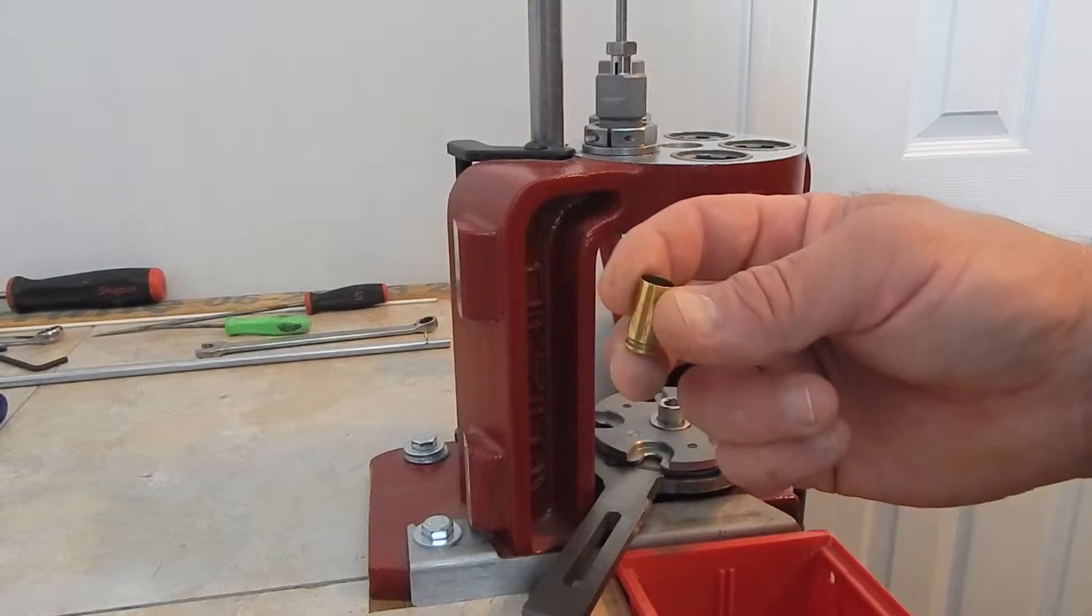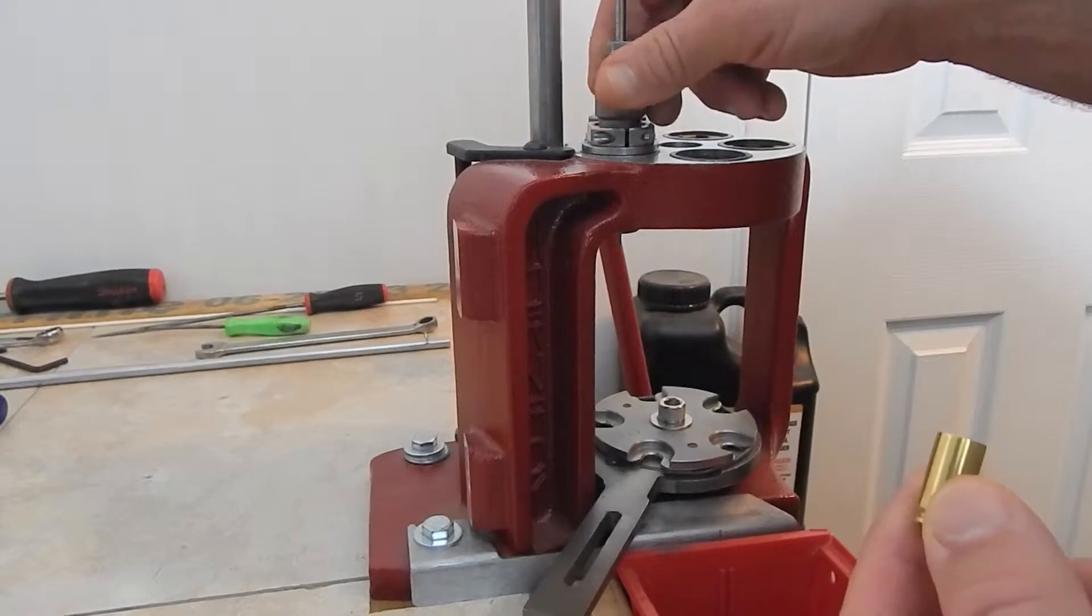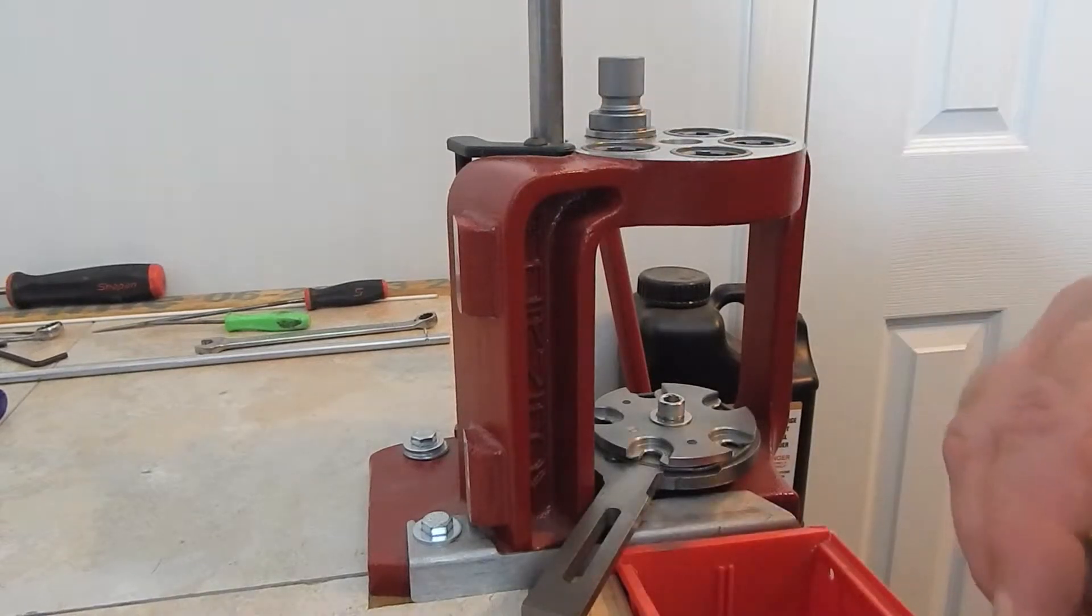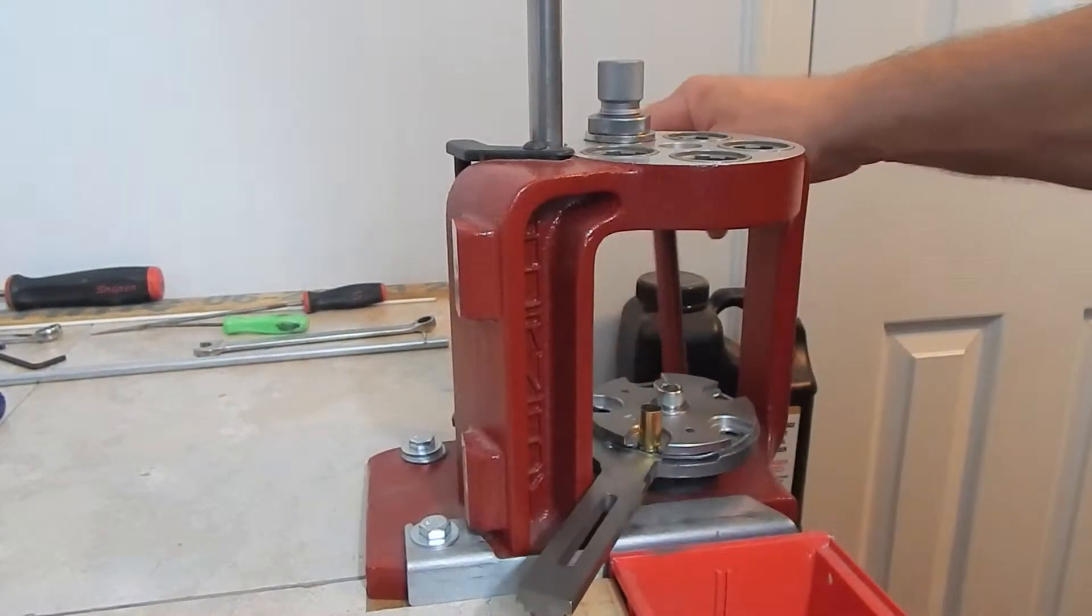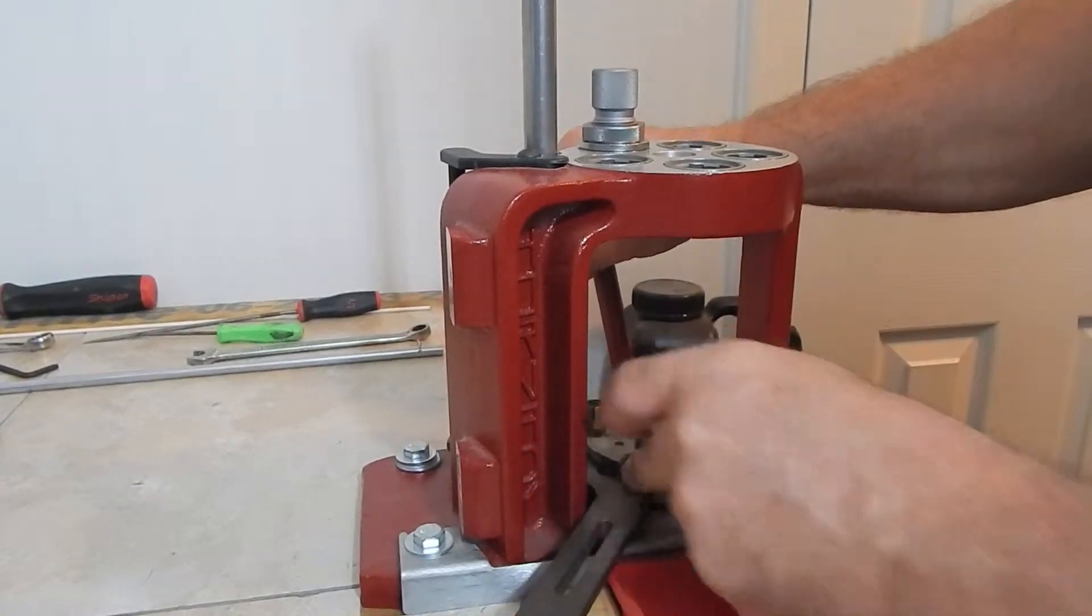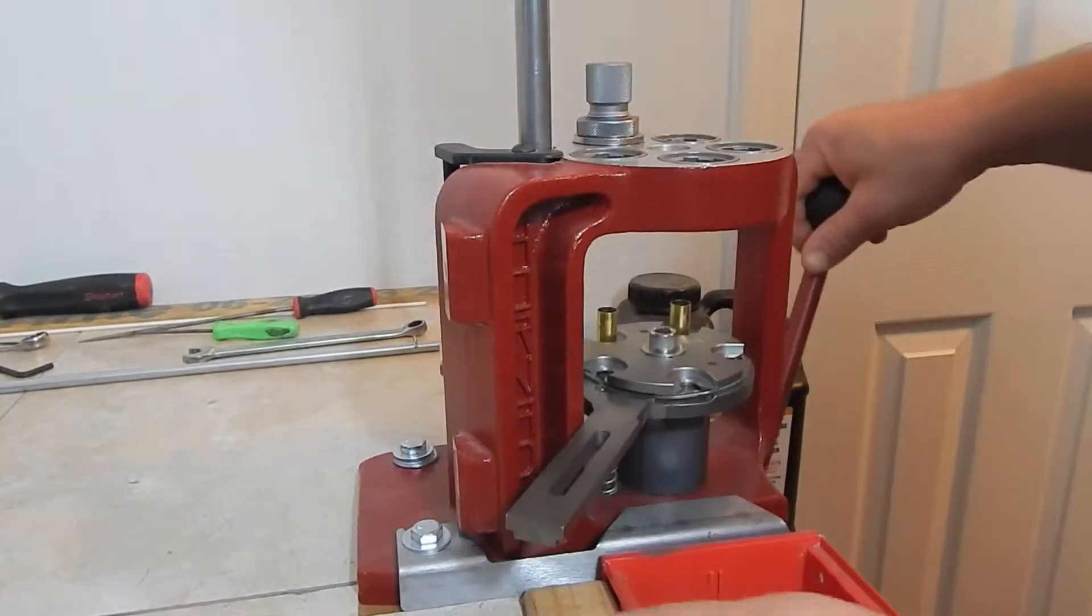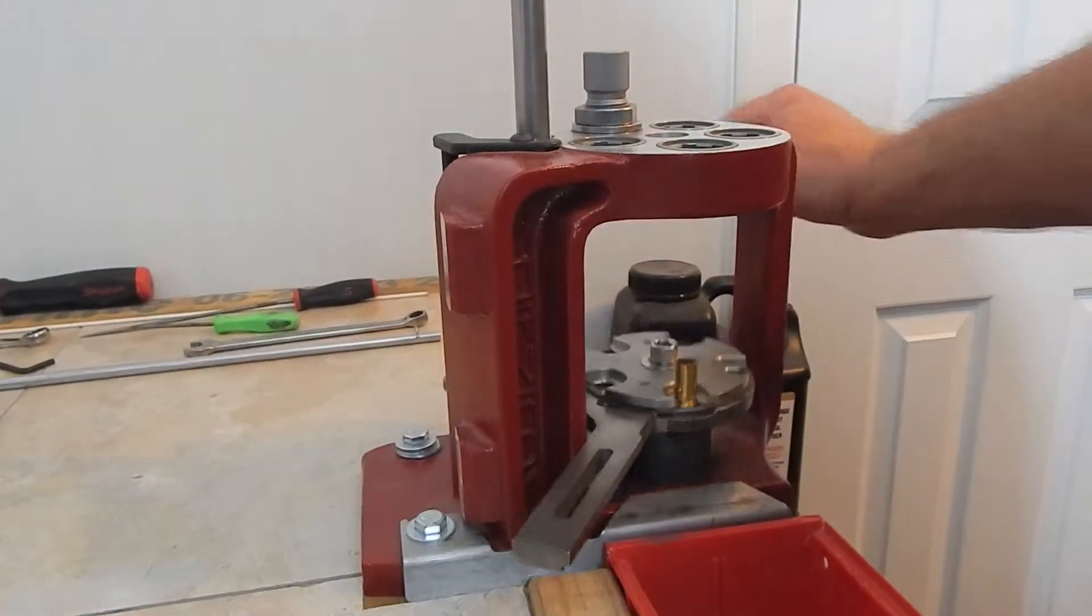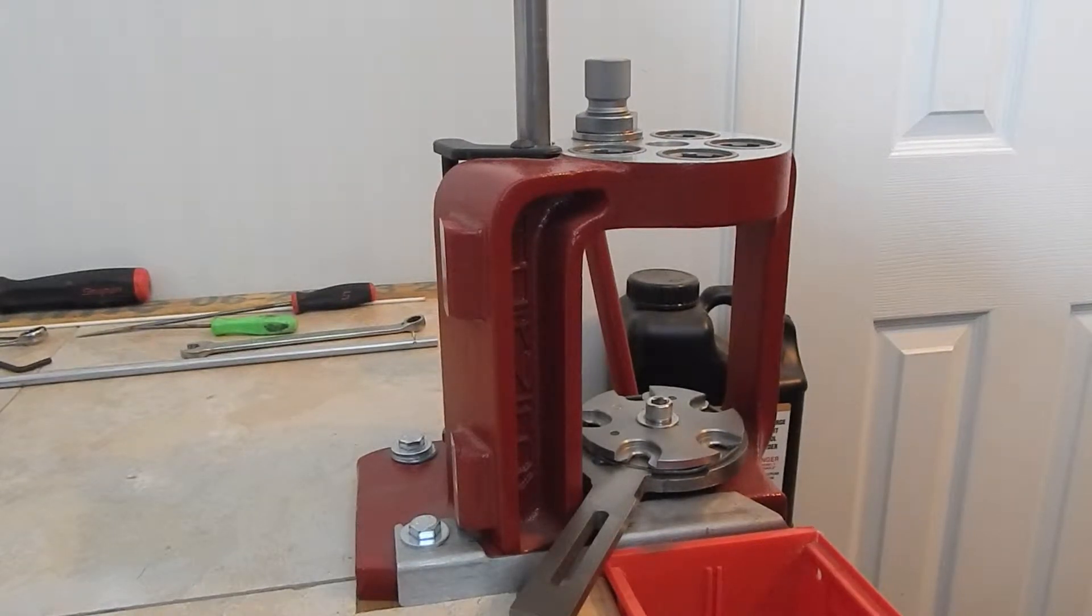So let me get these primers in here. I'll go ahead and take our sizing deprimer die out, throw it off to the side. We'll leave the expander die on it. I expand them more than one time, I don't think it matters. I need a casing, push forward, grab another, forward. I'll spin those on out of here and I'm going to pause the camera, get the rest of these ready to go, and then we'll pick up with the case activated powder charger.